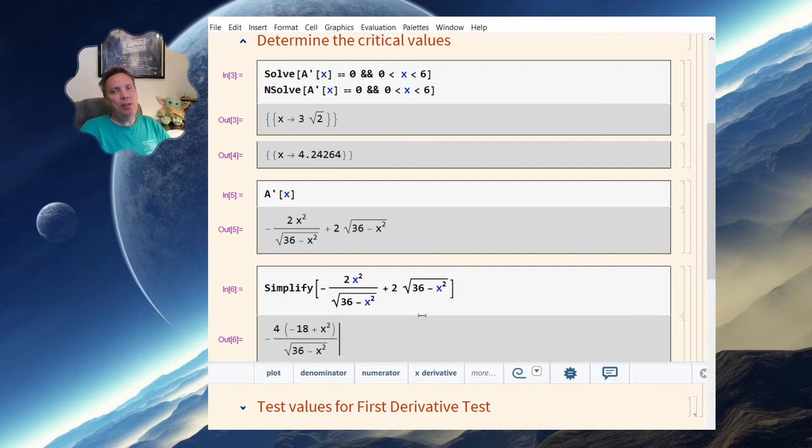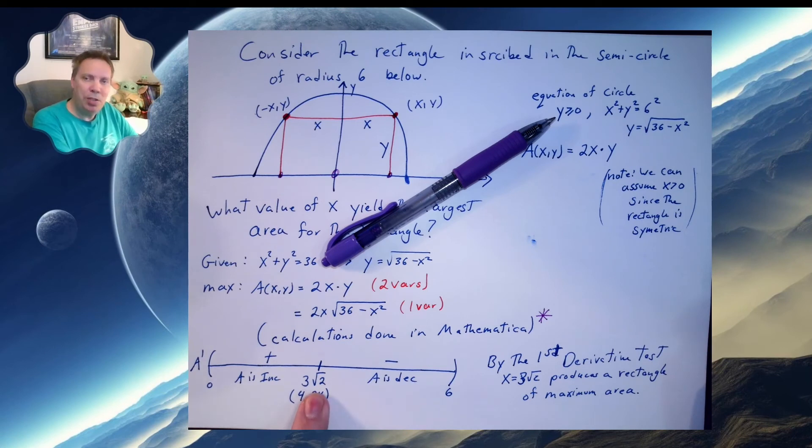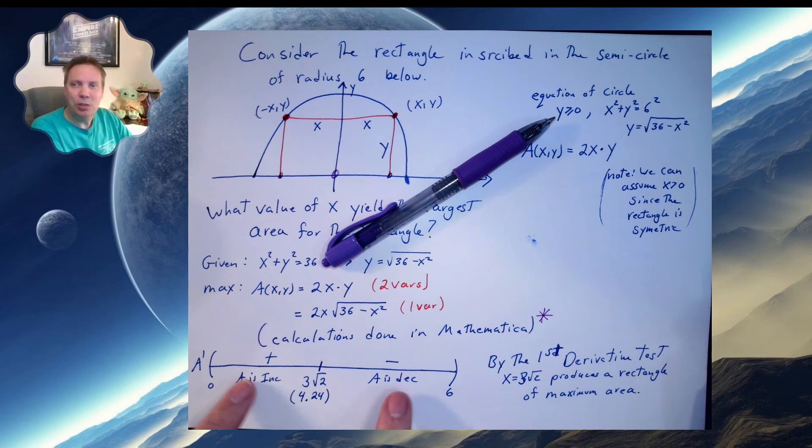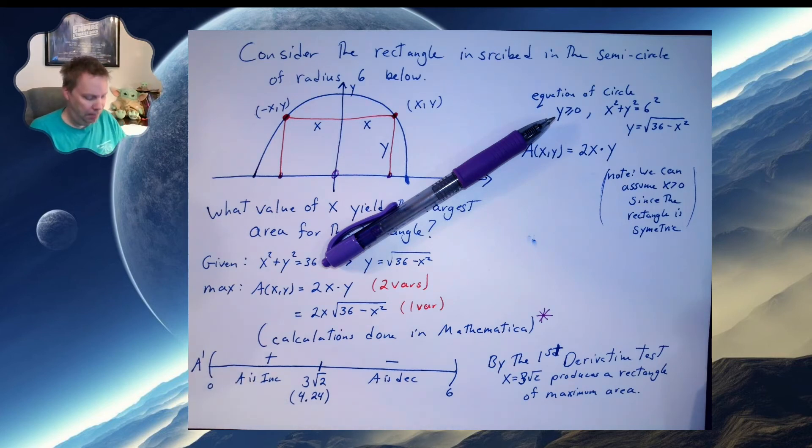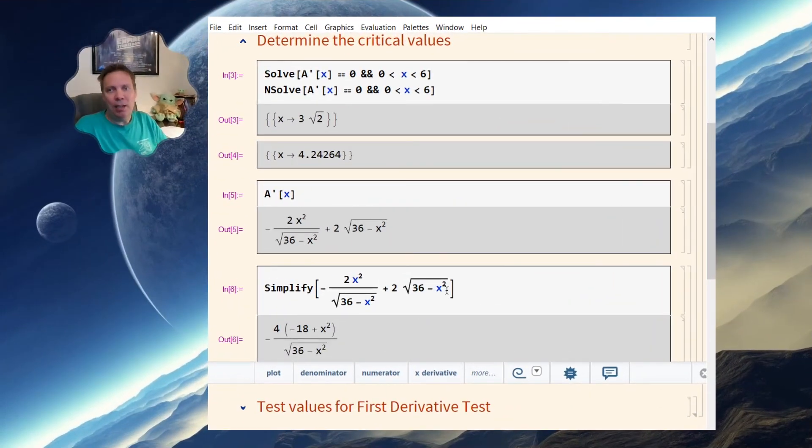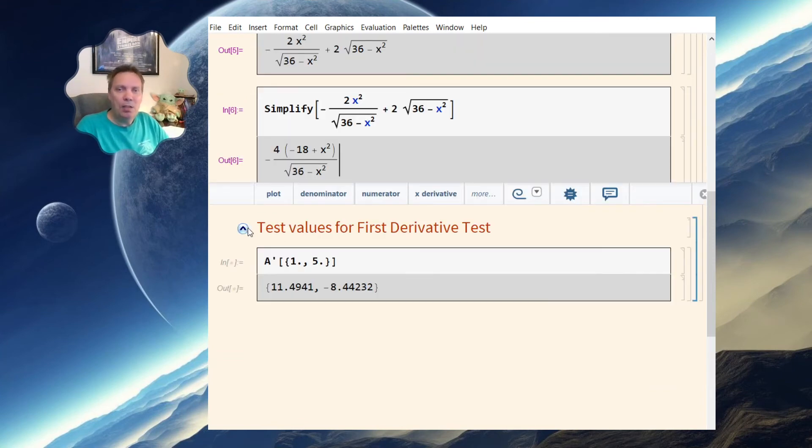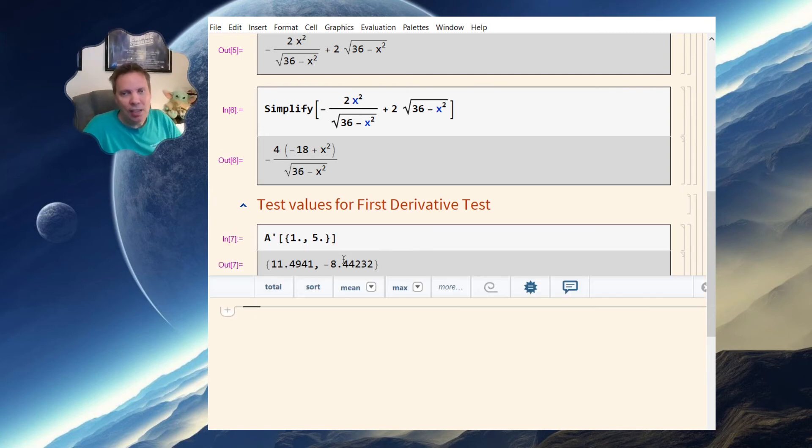So let's move on. What do I do with this? Well, what I did in my piece of paper is I wrote down this three root two. That came directly from our critical value, solving for the first derivative equals zero. Now I have to choose some test values. We've been doing this for a couple weeks now. So going back to Mathematica, I want to choose some test values. Well, I need to pick a value a little bit less than 4.24 and a little bit greater than 4.24. So I chose one and five. And when I evaluate this, I get a positive answer and a negative answer. That's all I need for this problem. So I'm going to transfer this positive and negative onto my piece of paper.